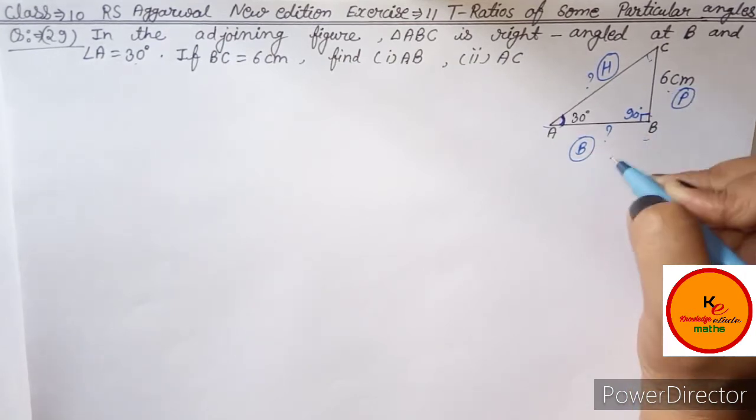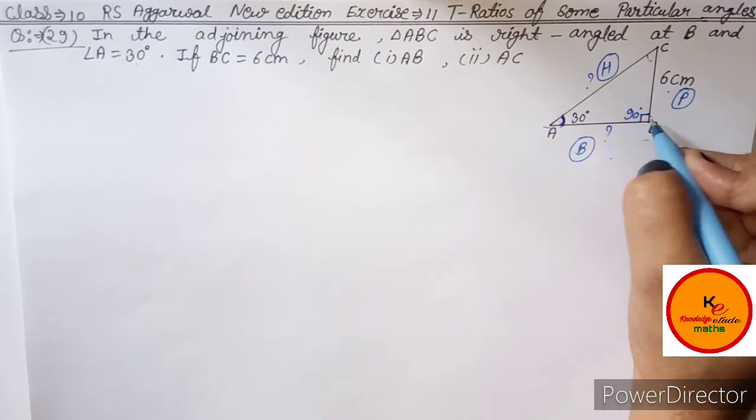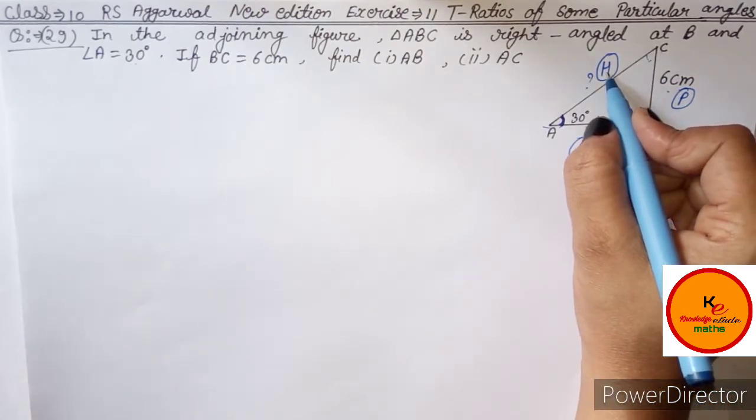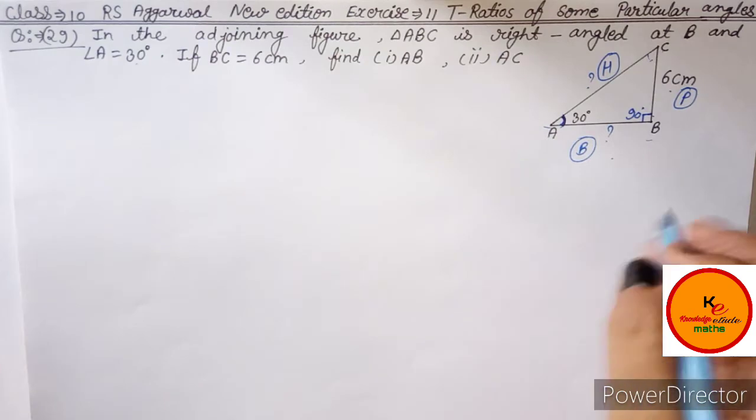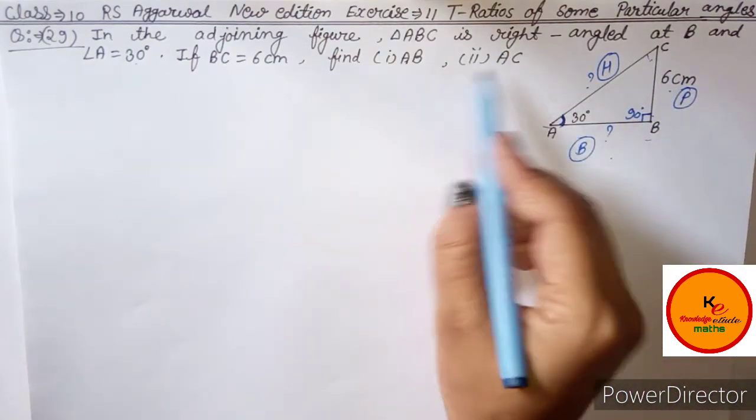But the side opposite to 90 degree, which is the hypotenuse, never changes in a right angle triangle. So you have to find these here. We'll write our trick according to this.